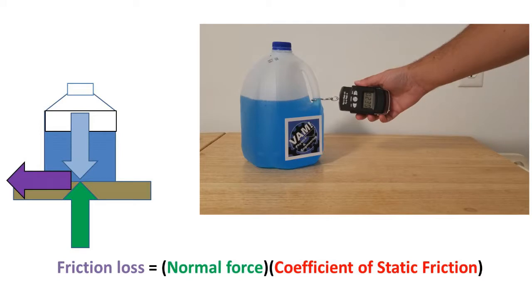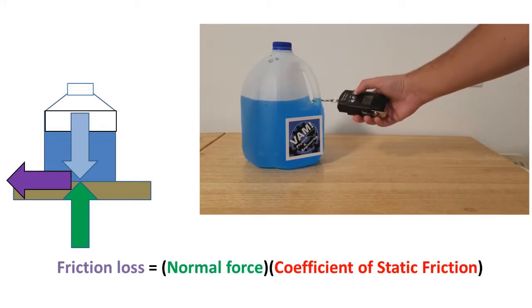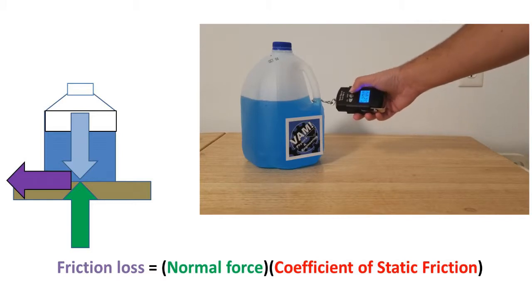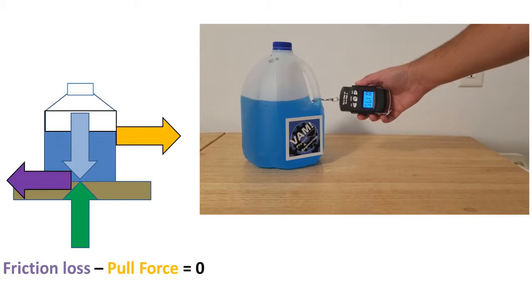The normal force multiplied times the coefficient of friction equals the force that has to be overcome when pulling the gallon jug. This force will be referred to as the friction loss. To get the jug to move, the pull force must be greater than the friction loss.